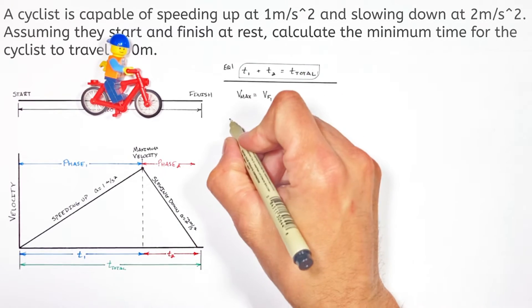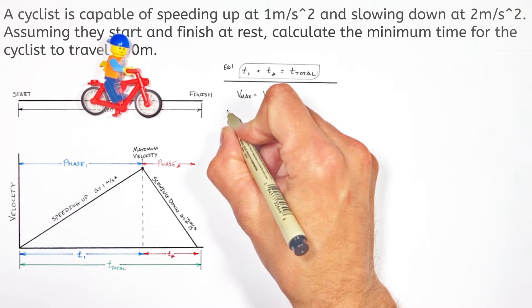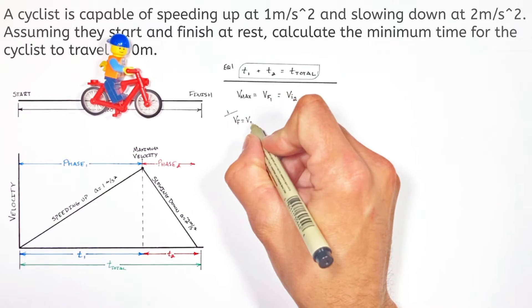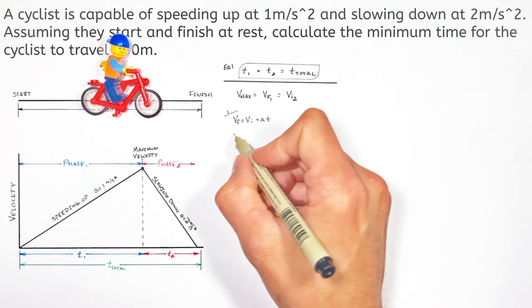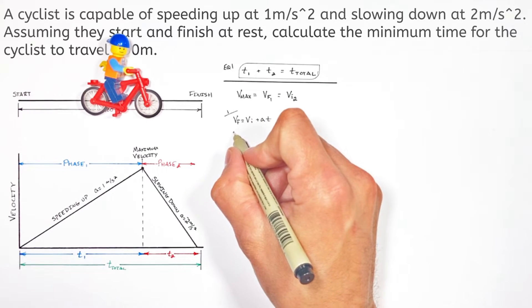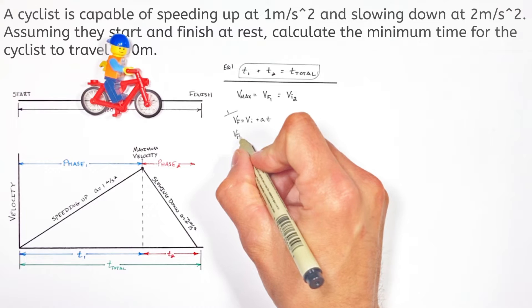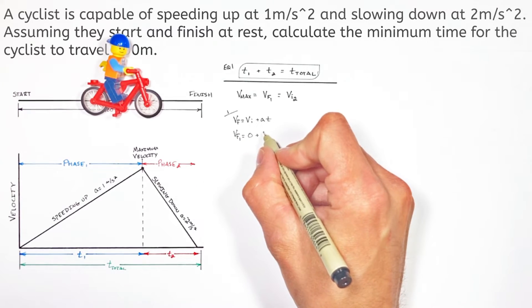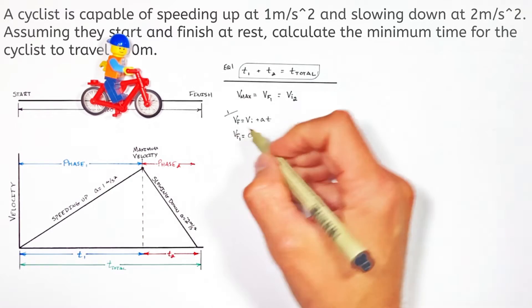So now we're going to apply the kinematic equations to each phase of motion independently. So using the equation VF equals VI plus AT. Applying that equation just to the first phase of motion,